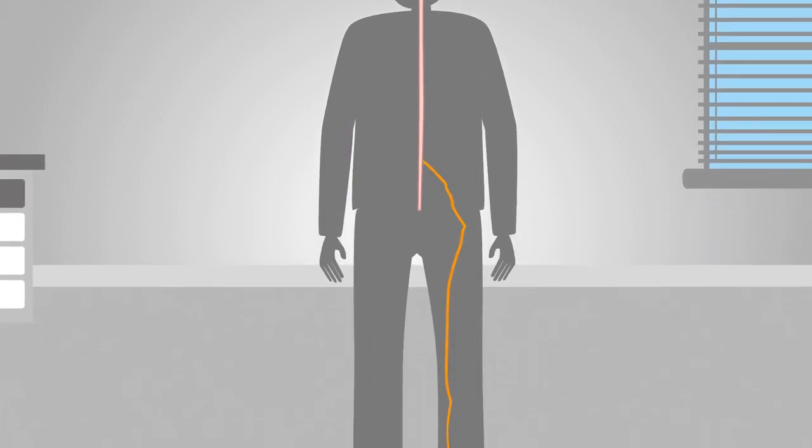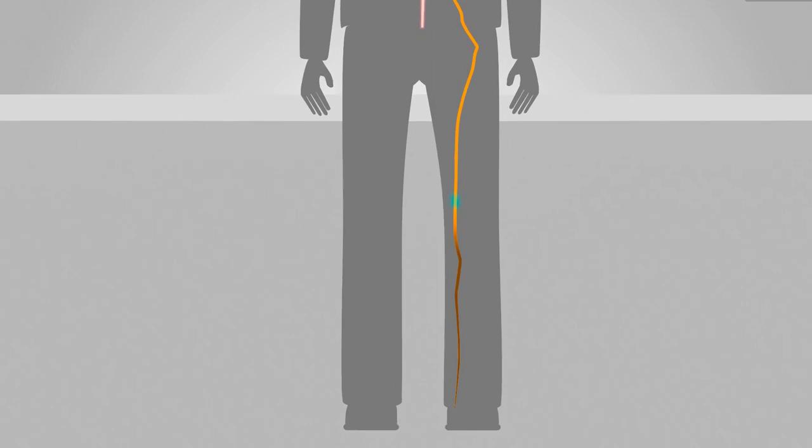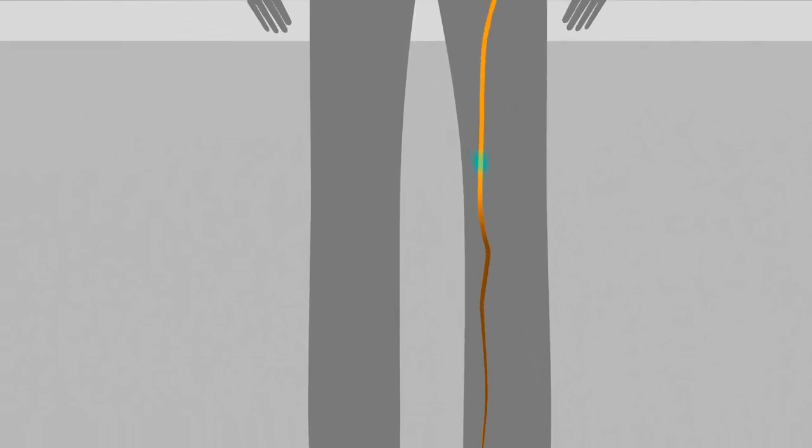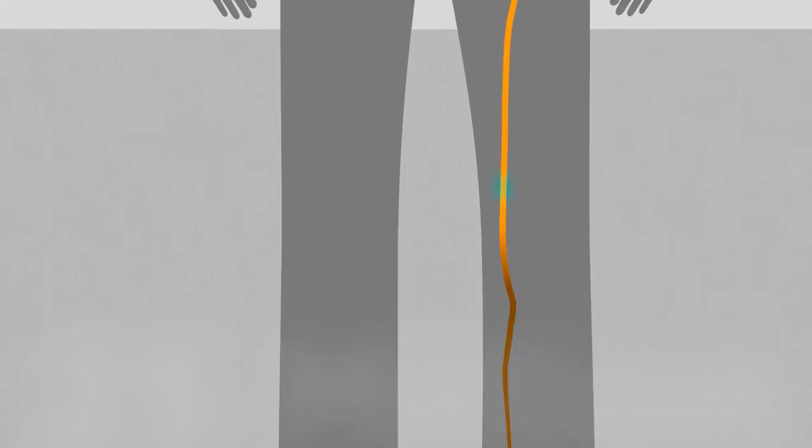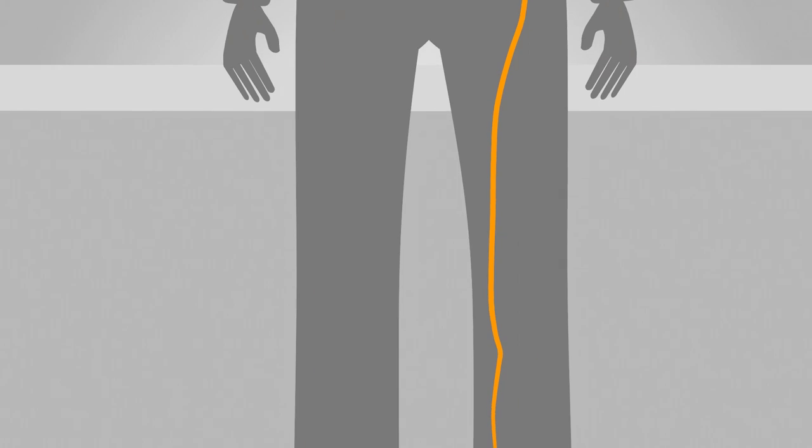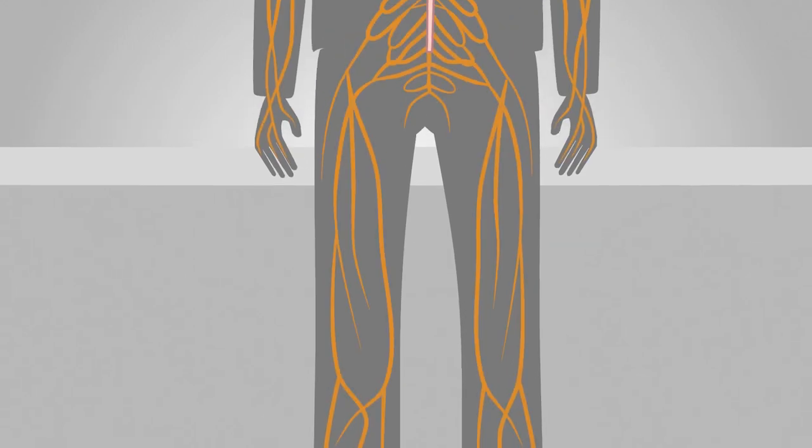So, what happens when the nervous system is disrupted? Peripheral neuropathy is a common disorder that affects approximately 25 million Americans. Worldwide, 8% of all populations are affected. It occurs when peripheral nerves are damaged.